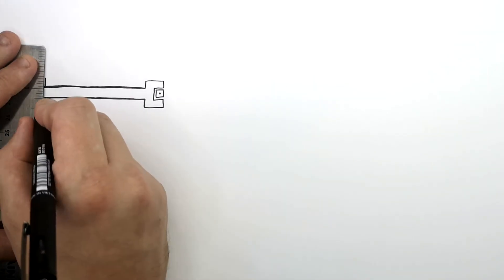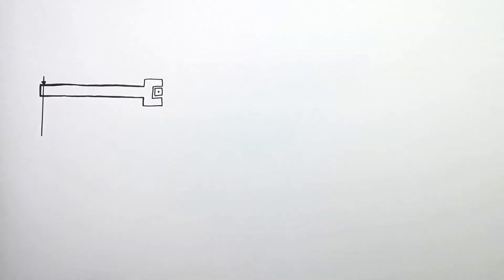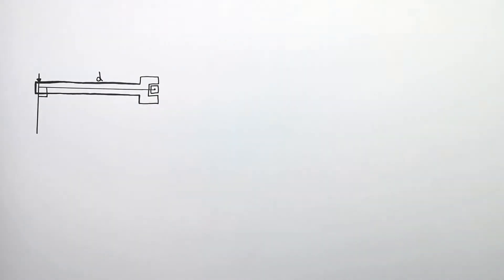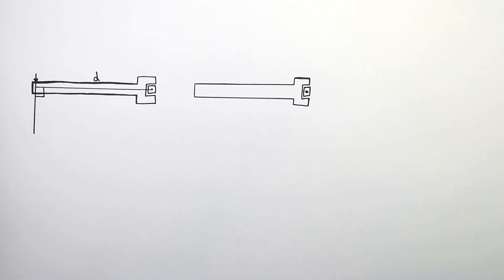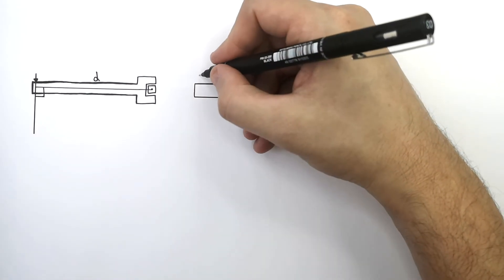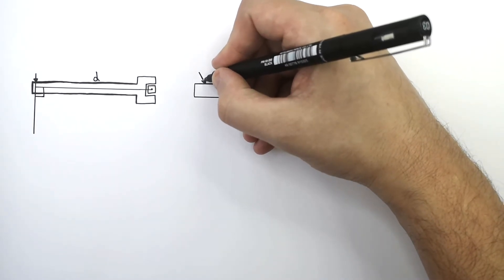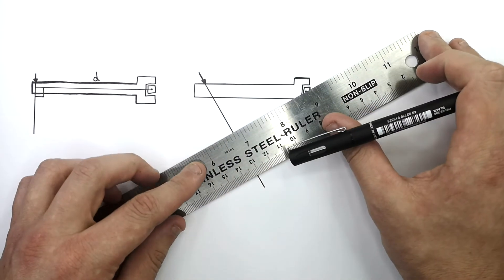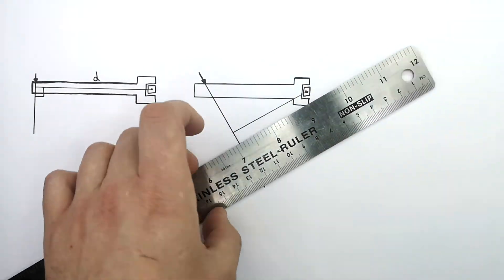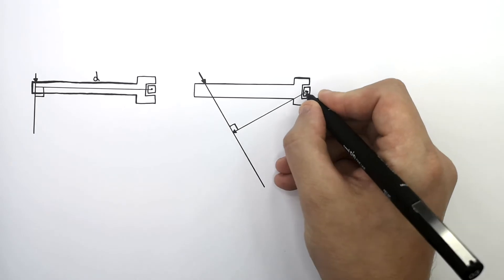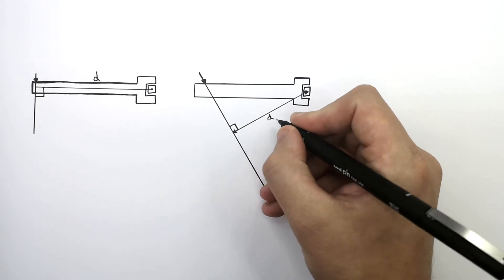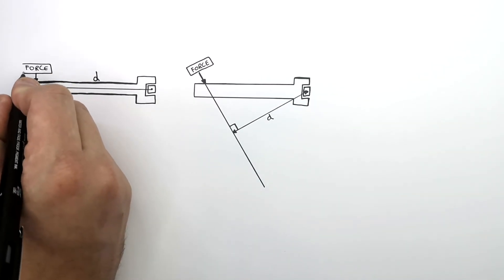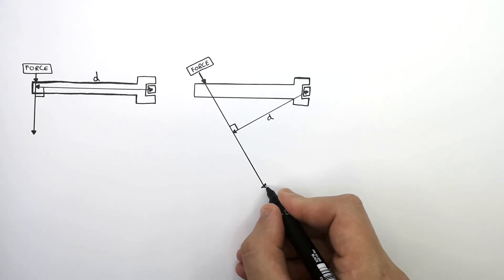This here is a spanner and a bolt. This is the line of action of the force. Remember, D is the perpendicular distance from the line of action of the force to the pivot. So what happens if the force is not 90 degrees perpendicular to the spanner handle? We draw the line of action of the force and measure D, which is now 90 degrees — at a right angle — to the line of action of the force. The force is acting at a different angle to the spanner handle.